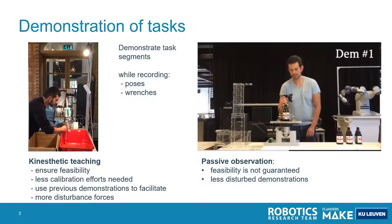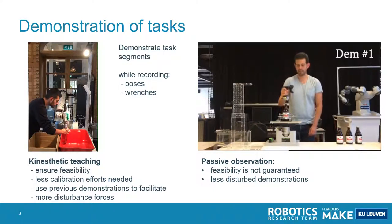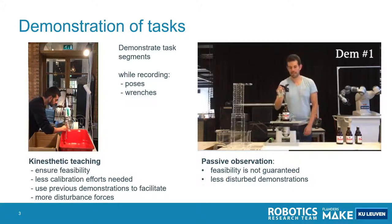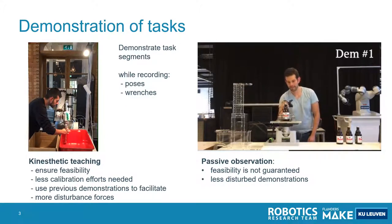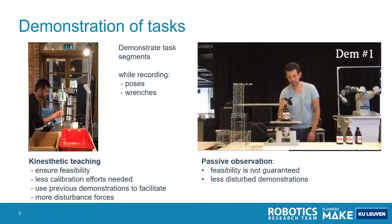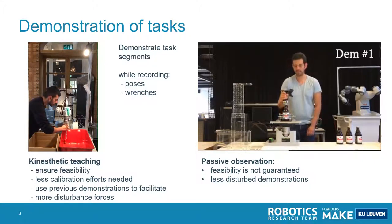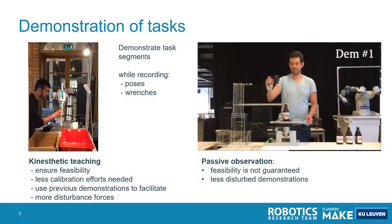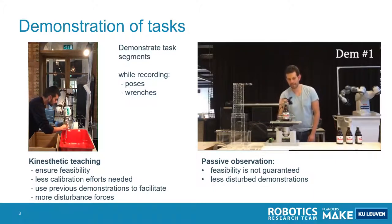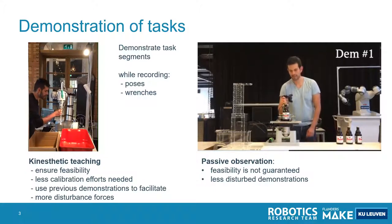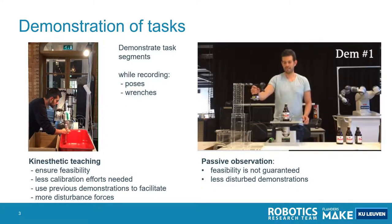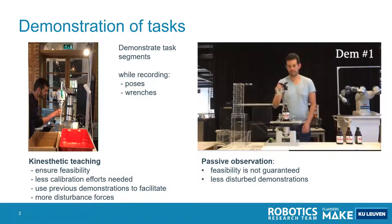A problem with kinesthetic teaching is that it's an active control system — a force controller — and it has much more disturbance forces than a free motion in space. Then with passive observation, which is just a position measurement system and a force sensor, the feasibility is not guaranteed anymore and we have to be a little bit more careful about the calibration. However, the advantage here is that our demonstrations are much less disturbed by control errors.